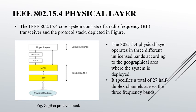This unlicensed band specifies a total of 27 half-duplex channels across the three frequency bands. According to the energy efficiency issue, low rate and low duty cycle are provided. IEEE 802.15.4 compliant devices are active only during a short time, and the standard allows some devices to operate with both the transmitter and the receiver inactive for over 99% of the time.